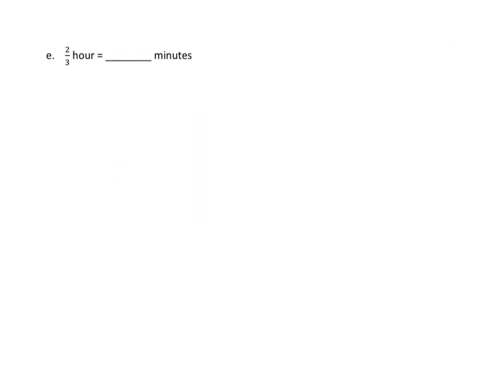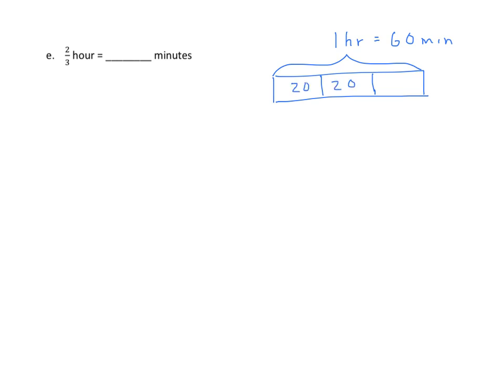Next, hours and minutes. Again, we can use a tape diagram. We have one whole hour, and one whole hour equals sixty minutes — we need to know these units of conversion. The state of New York no longer provides conversion charts for many of these units. Dividing sixty into three equal parts, we get twenty minutes each. We want two-thirds, and two times twenty is forty minutes.